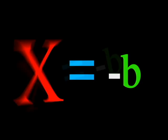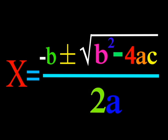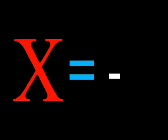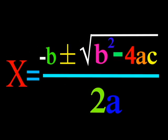x equals negative b, plus or minus the square root of b squared minus 4ac, all over 2a. x equals negative b, plus or minus the square root of b squared minus 4ac, all over 2a.